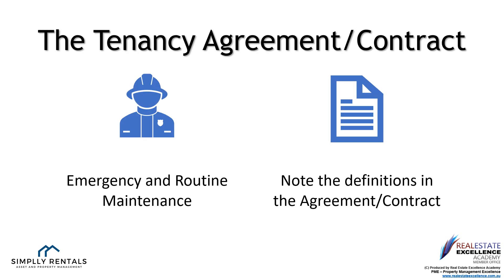The standard terms of the Tenancy Agreement Form 18A set out the legal definitions of emergency maintenance and routine maintenance. Please note the definitions in the agreement. As stated, everything is legally required to be in writing. However, if you have an emergency repair situation as per the definition, please phone our agency and refer to the agreement for after-hours contact details and procedures — we'll confirm in writing at a later date.